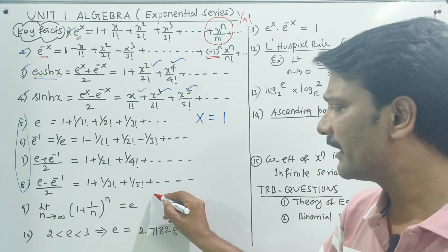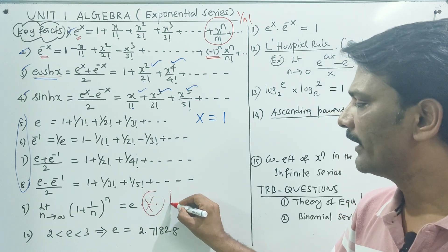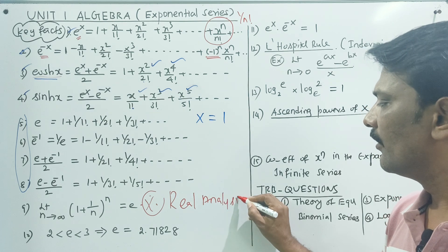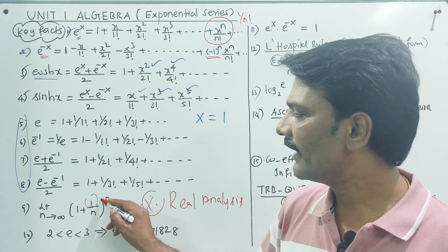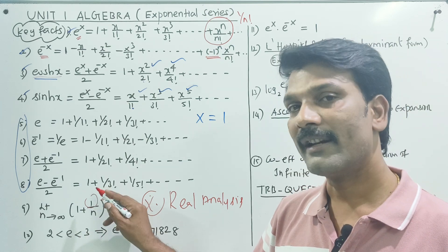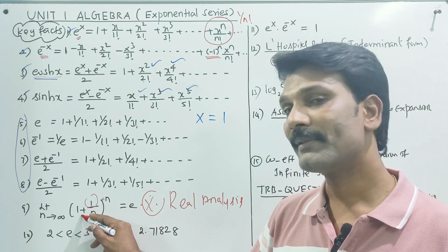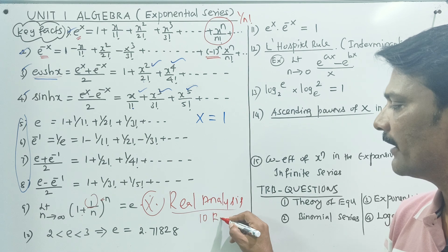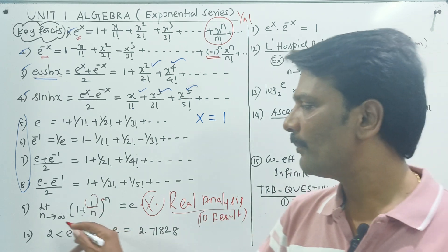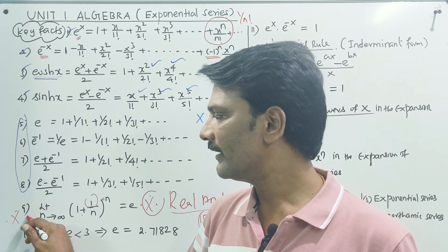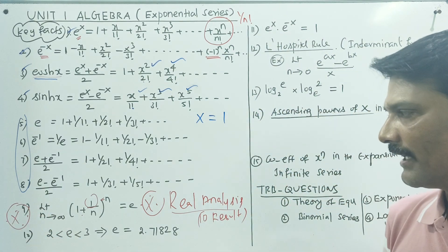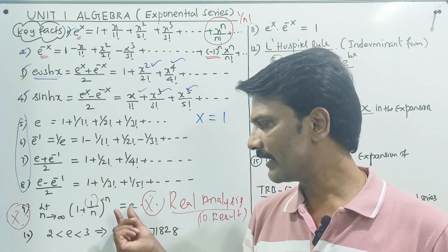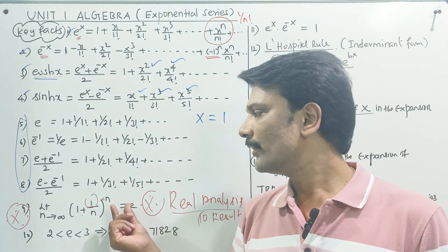Let's look at the real analysis. In the real analysis unit, there is a result — you can write a result. The result is the limit n tends to infinity of 1 plus 1 by n, whole power n. Limit n tends to infinity of 1 plus 1 by n, whole power n — this is the value e.